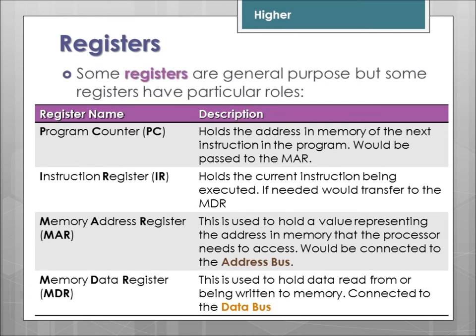Some registers are general purpose and can be referenced by programmers, usually when writing assembly language. The registers you need to know about are the memory address register, which is primarily associated with the address bus and holds the value representing the address in memory that the processor is referencing — wanting to either read from or write to. The memory data register is primarily connected to the data bus and holds the data that's being read from or written to memory.